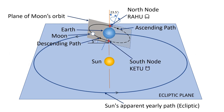So this is the story of Rahu and Ketu. But why are these called Chaya Grahas? It is a well-known fact that eclipses generally occur when the Moon is at these intersecting points called North Node and South Node. Let's understand what happens during a Lunar Eclipse and a Solar Eclipse.